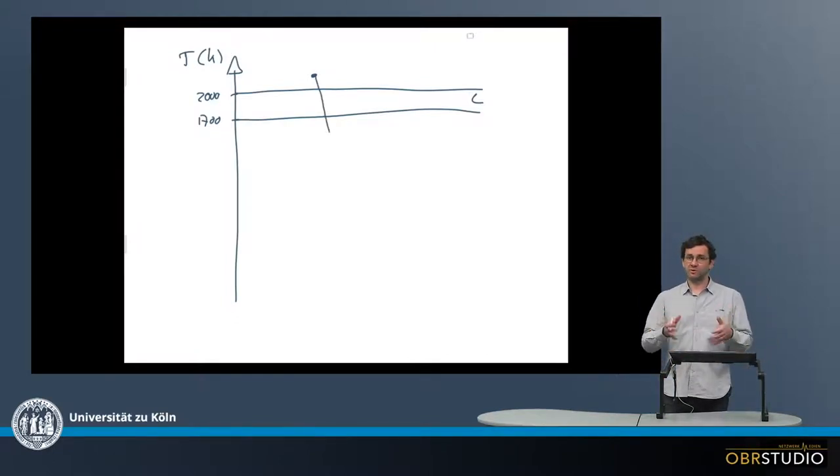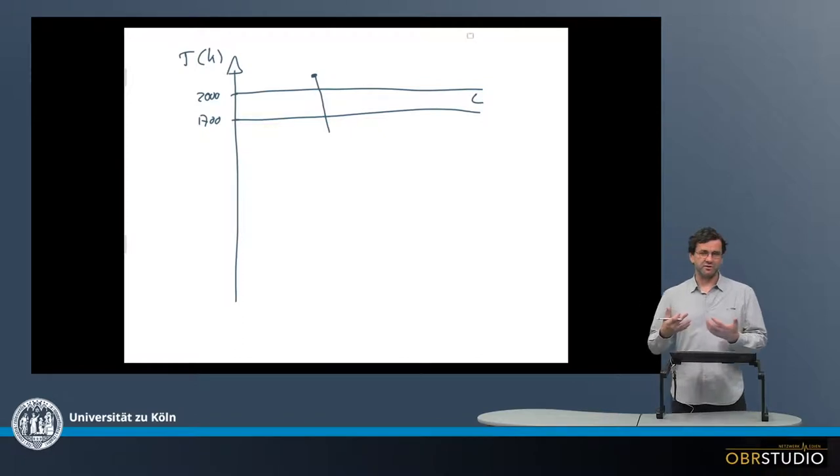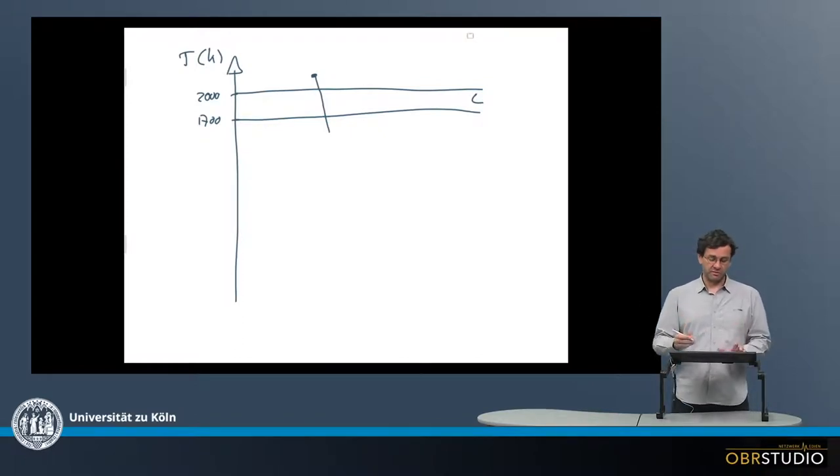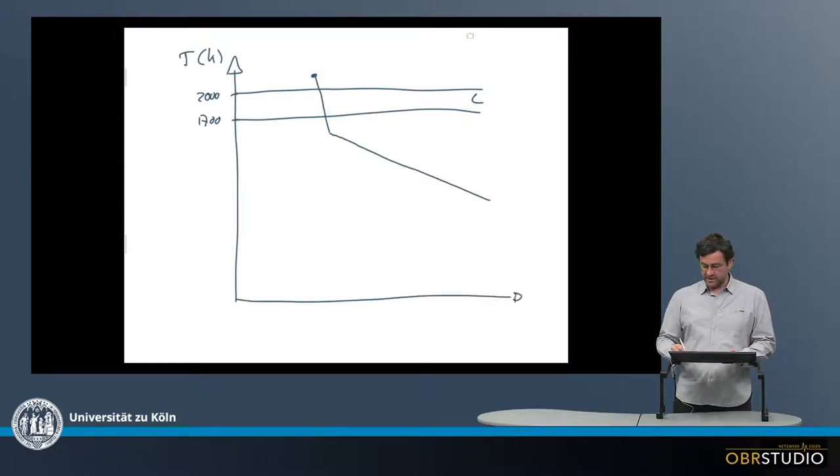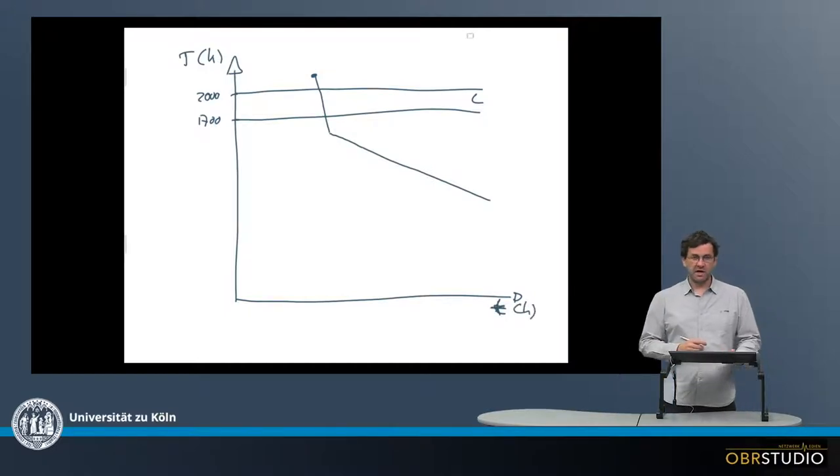Now this one chondrule was not alone. There were many chondrules forming at the same time. And these chondrules heated each other, which means they kept each other a little warm and cooling was a little bit slower. So we can make an x-axis here as well, which is the time t in, for example, hours.